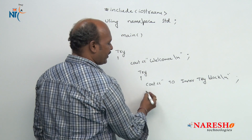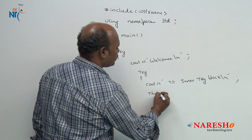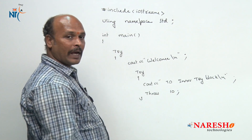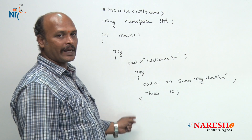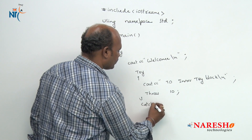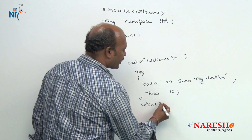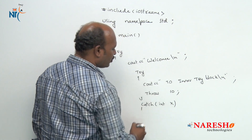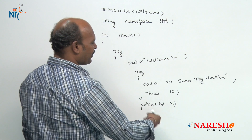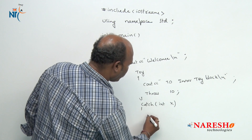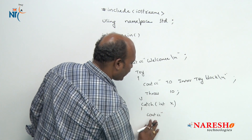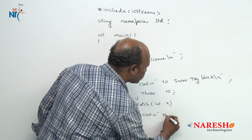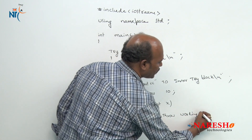Now the inner try block has a throw keyword — suppose throw 10. Whenever throw is executed, it directly goes to the related catch. Here there is a catch, and I am going to write catch of int x. This catch contains a message: cout, something like 'throw working', then a newline.